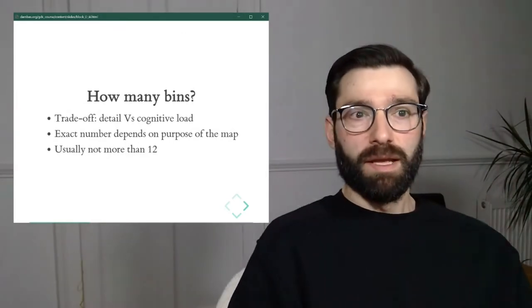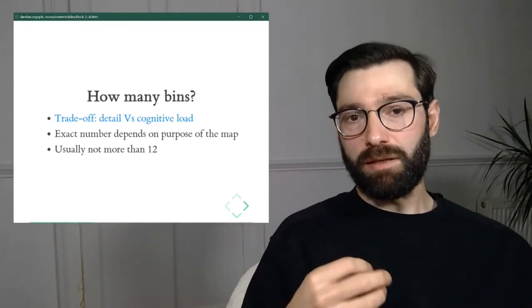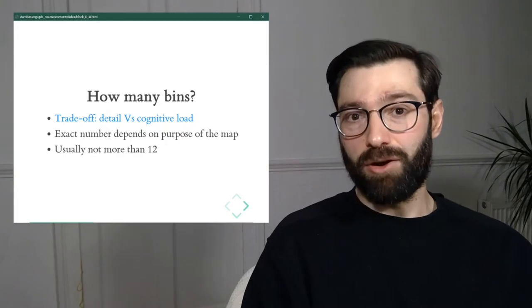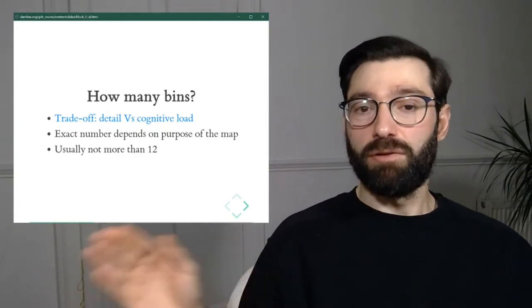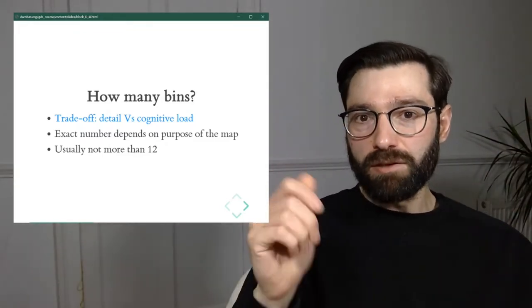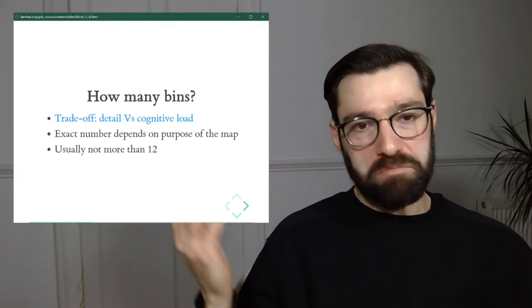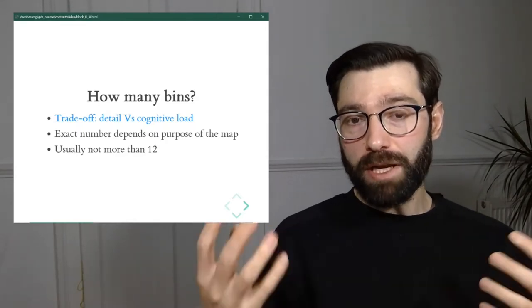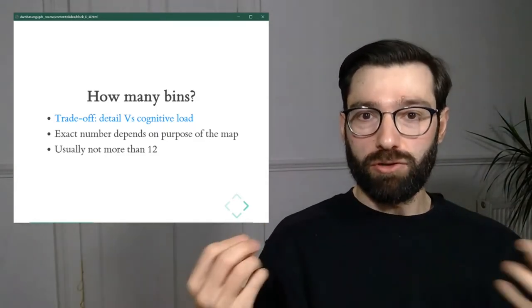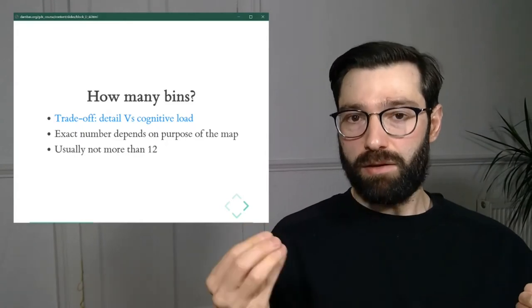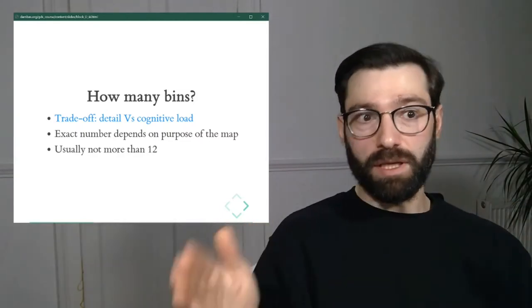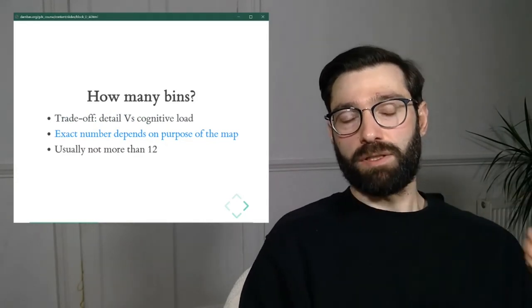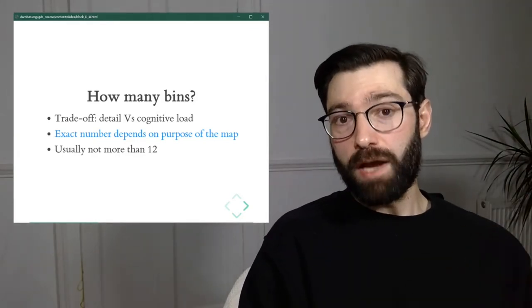The first question: how many bins? This is a trade-off — we're trading off detail and granularity for cognitive load. Cognitive load describes the fact that the human brain cannot process too much nuance. Even if the screen displays 300 different gradients of a color, the human brain is only going to be able to pick up about 12 at most.